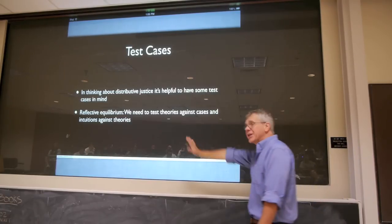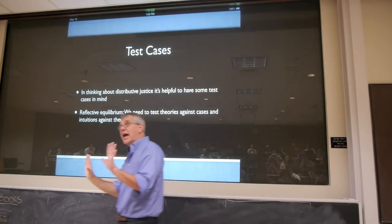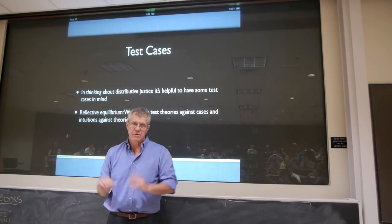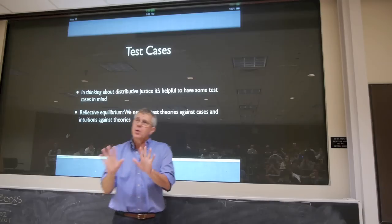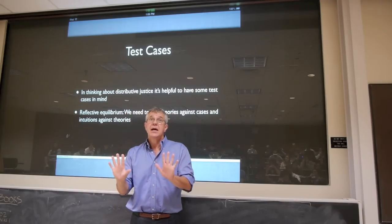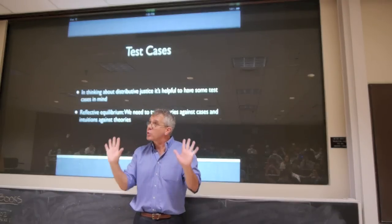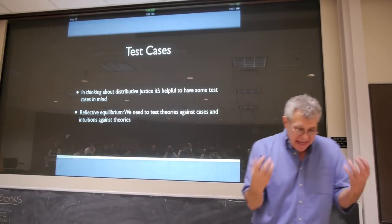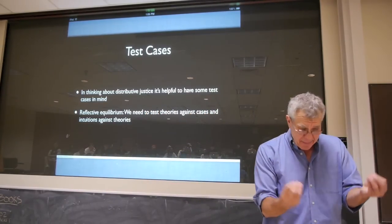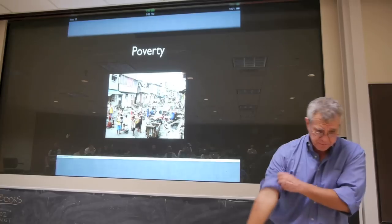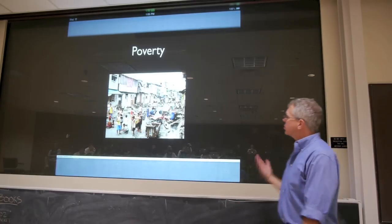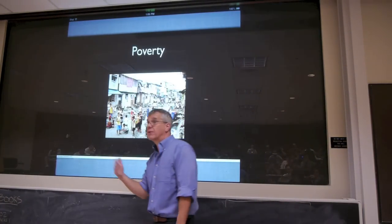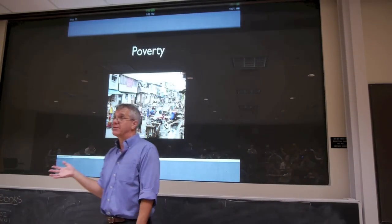In addition to having that categorization of theories, Nozick will argue for a third kind of theory — a historical theory. It's also helpful to have some test cases in mind, some familiar problems of distribution that we might think about. One is just the problem of poverty. That's one of the main test cases that people think about in connection with distributive justice.